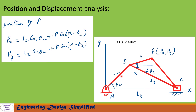The crank has length l2 and the coupler has length l3. The link from B to P has length p, and the angle between this line p and the coupler link is alpha. The coupler angle theta3 is measured from the horizontal. In order to find px and py — the x and y coordinates of point P — we derive displacement equations.